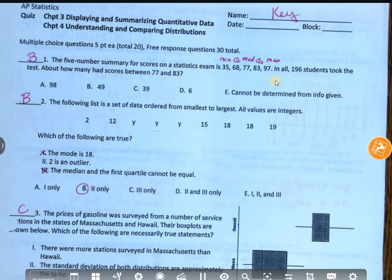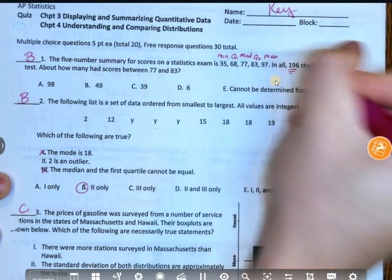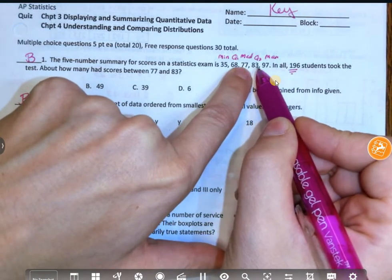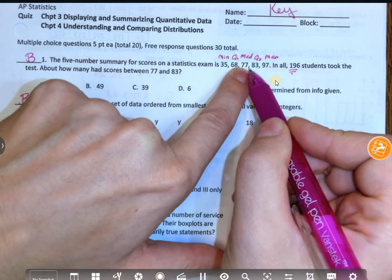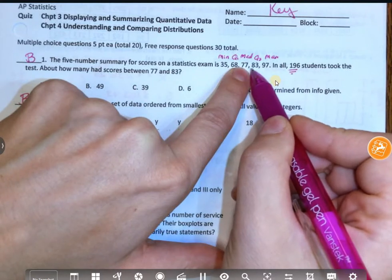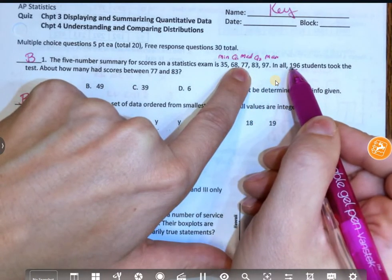I know somebody asked me, are those in order? They're always in order. It always goes from smallest to biggest. It's never going to be anything other than that. And it tells me that 196 students took the test. In each quartile, what percent of the population is shown? 25%. So for this version, if I'm going between 73 and 83, what percent should be between that? Between the median and quartile three? That's 25%.